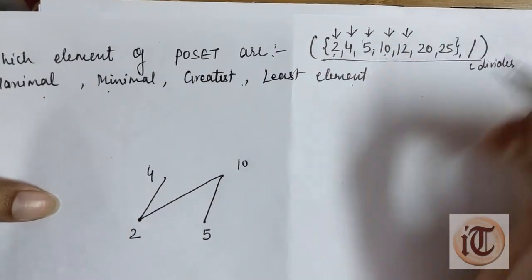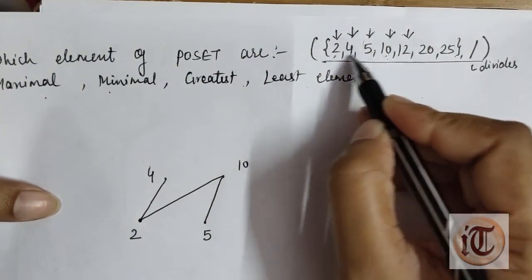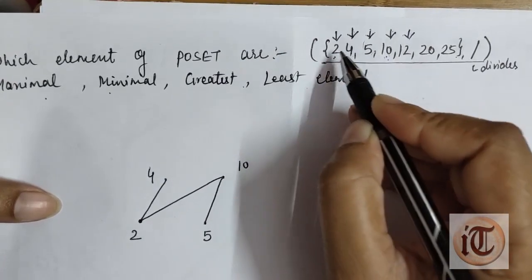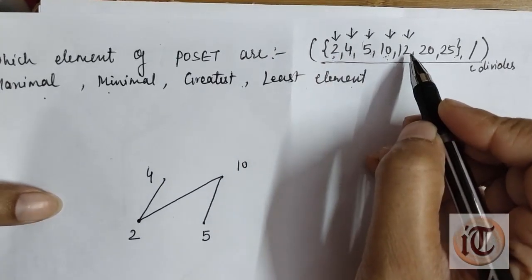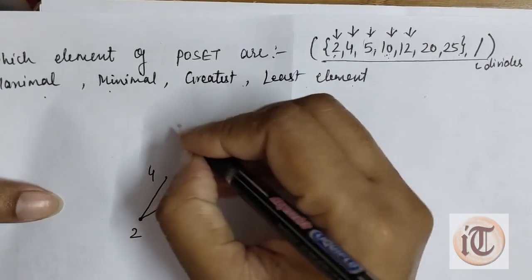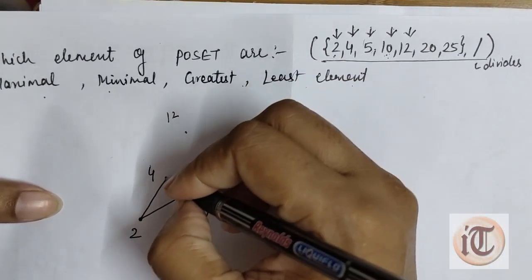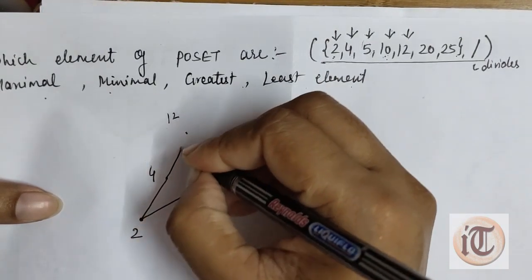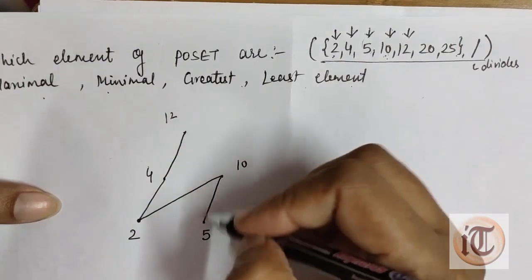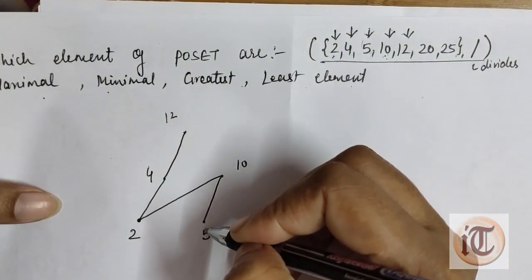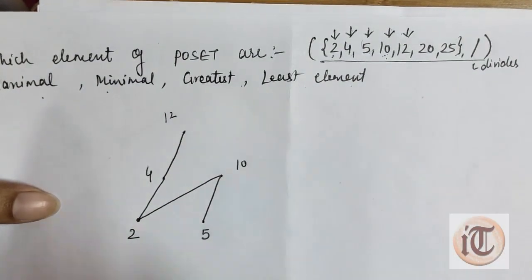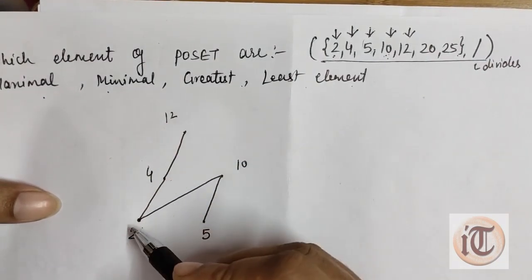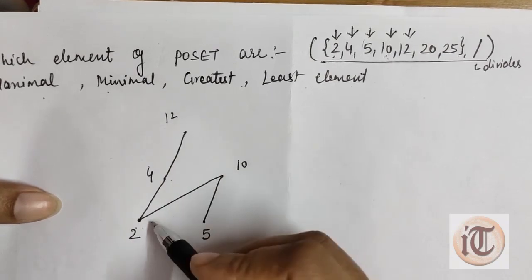The next element is 12. We check with all previous elements: 2, 4, 5, and 10. Is 12 divisible by 2? Yes. Is 12 divisible by 4? Yes — so we place 12 and connect it to both 4 and indirectly to 2. Is 12 divisible by 5? No. Is 12 divisible by 10? No. So 12 is connected to 4, and through 4 indirectly to 2.